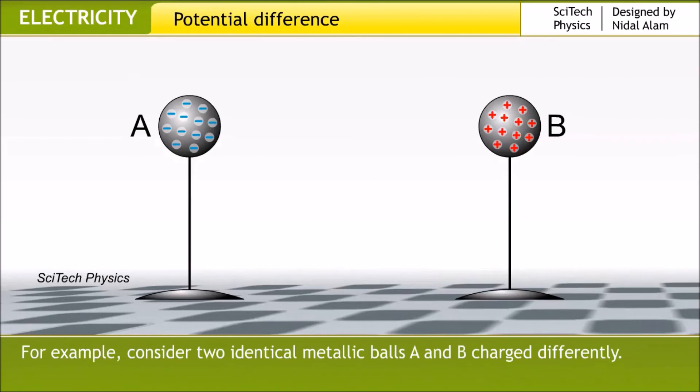For example, consider two identical metallic balls A and B charged differently. The two balls are in different electric states.